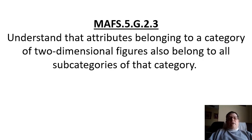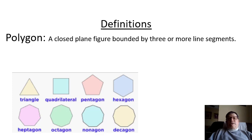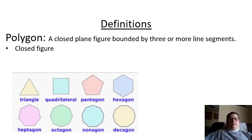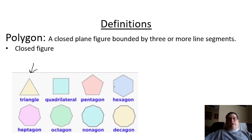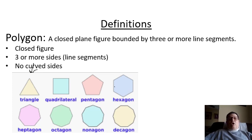First, we have some definitions we need to clarify. Polygons — this is previous year's learning, but remember, a polygon is a closed plane figure bound by three or more segment lines. It makes sense that you'd have to have at least three sides, and they're all classified as polygons. The three attributes are: closed figure, three or more sides, and no curved edges — in other words, they have to be straight lines, they cannot be curved.